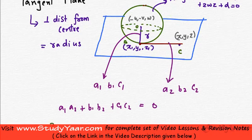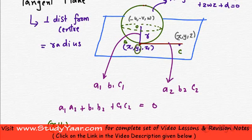It is going to be x minus minus u, so it is going to be x plus u. Then it is going to be y minus minus v, which is going to be y plus v.